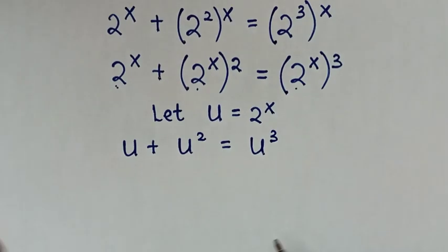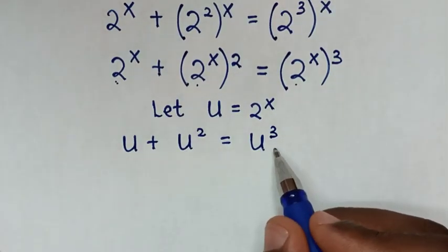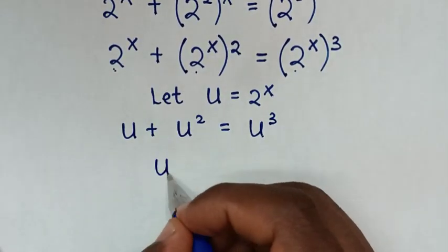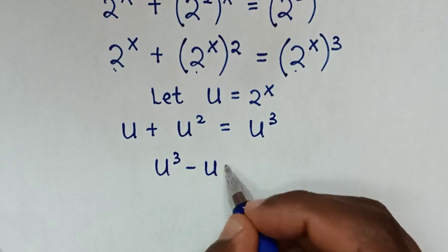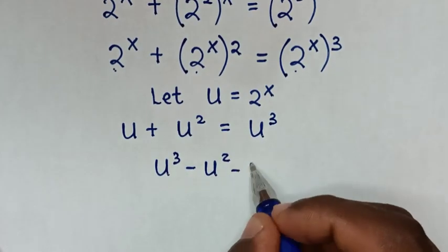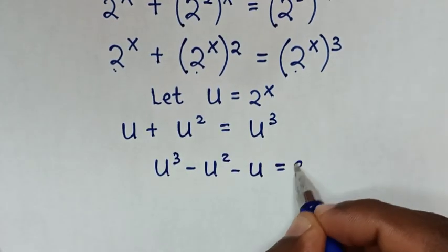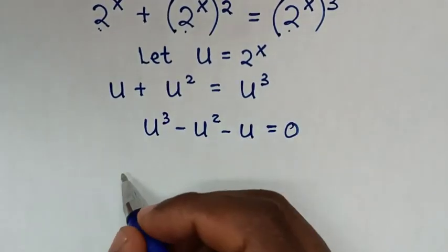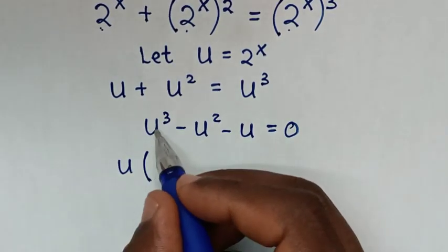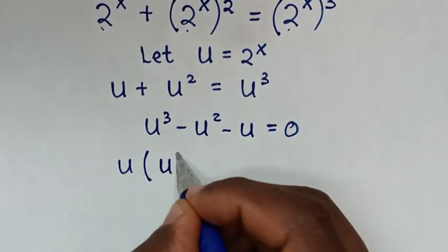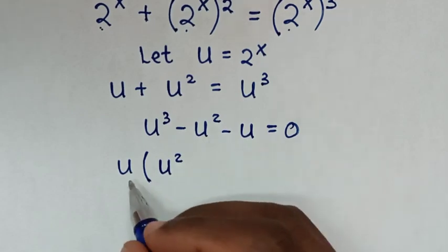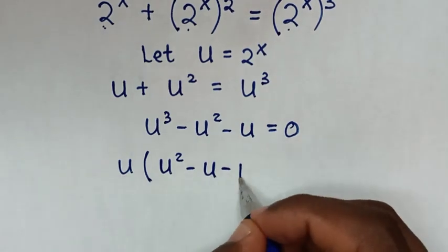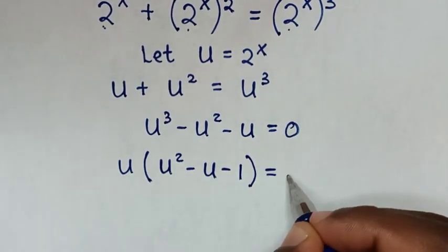In the next step, we move u squared and u to the right side. So it becomes u cubed minus u squared minus u is equal to 0. Then u is common, so we factor out u to get u(u squared minus u minus 1) equals 0.